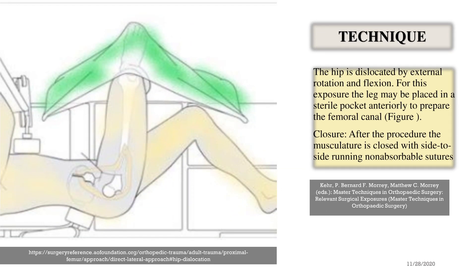The hip is dislocated by external rotation and flexion. For this exposure, the leg may be placed in a sterile pocket anteriorly to prepare the femoral canal.